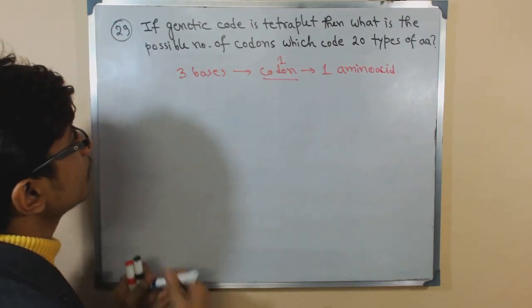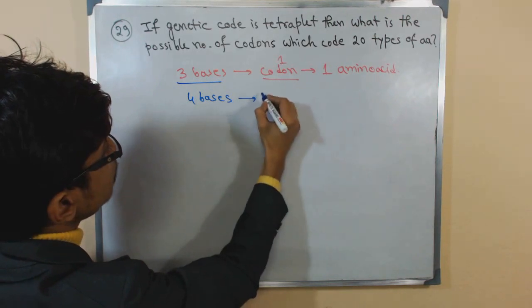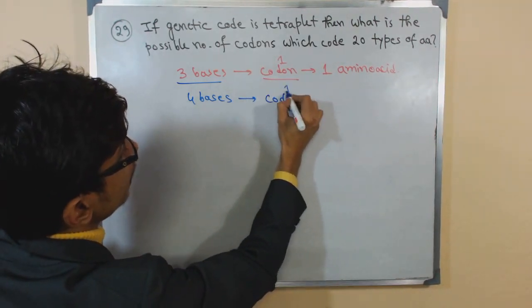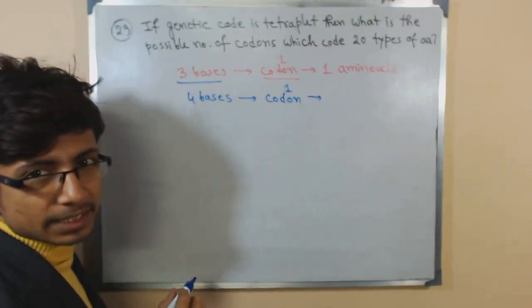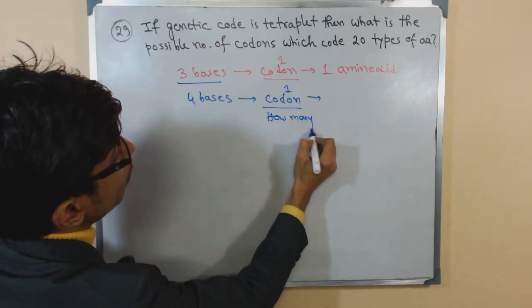Now the question is, if four bases are termed as or considered as codon, then in that case, how many codons are required to code for 20 amino acids?